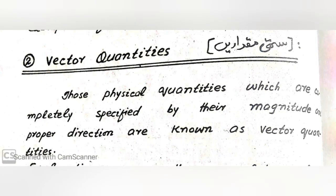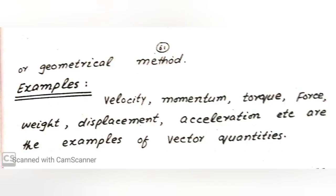Vector quantities: those physical quantities which are completely specified by their magnitude with proper direction are known as vector quantities. Examples: velocity, momentum, torque, force, weight, displacement, and acceleration.